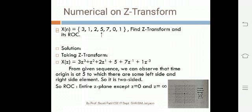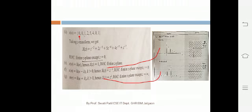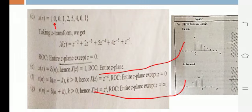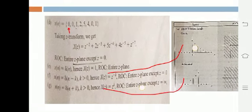Now let us see another problem. x[n] is equal to [0, 0, 1, 2, 5, 4, 0, 1]. Again the origin position is not given, so the leftmost zero is at origin. Since the leftmost element is the origin, we have only negative z indices. So X(z) equals z raised to minus 2, plus 2 into z raised to minus 3, plus 5 into z raised to minus 4, plus 4 into z raised to minus 5, plus z raised to minus 7. The ROC is the entire z-plane except z equal to 0.